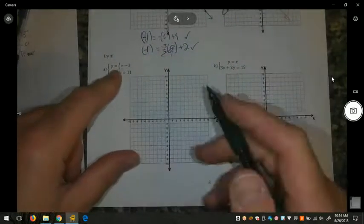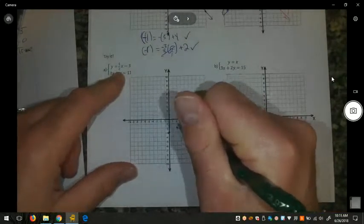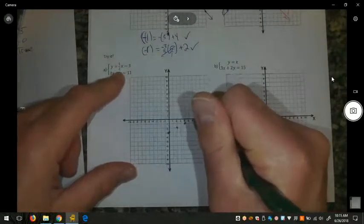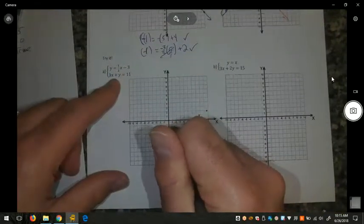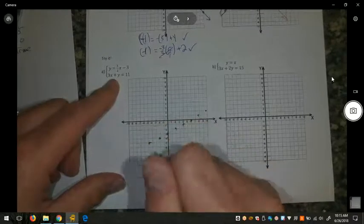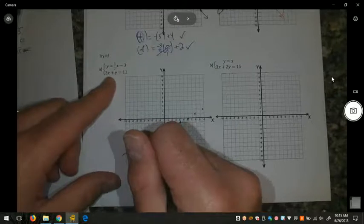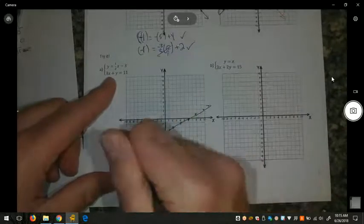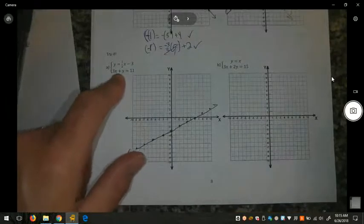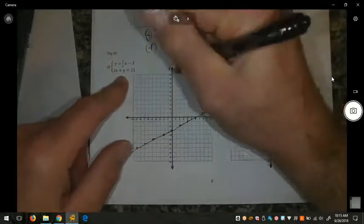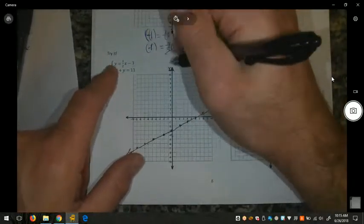Welcome back. So for letter A, you should have started at negative 3 and followed a slope of up 1 over 2, giving you this graph, or down 1 back 2, giving you this line. For the one underneath, you would have needed to find the x and y-intercepts, or put it in slope intercept form. We have a little problem in that it goes to 11. I'm just going to put an extra mark there for 11.